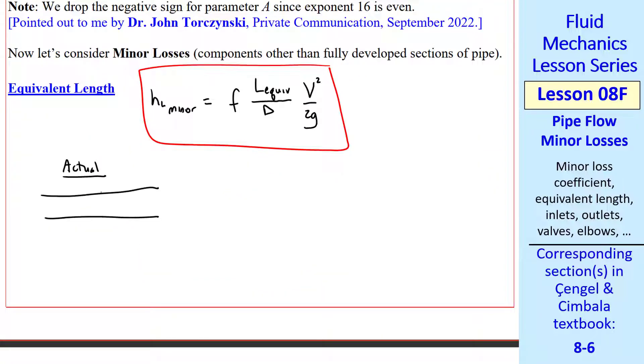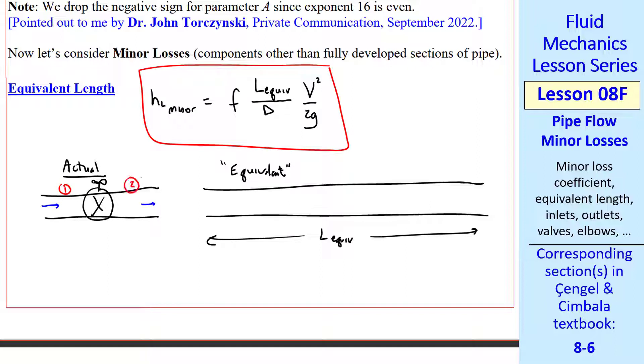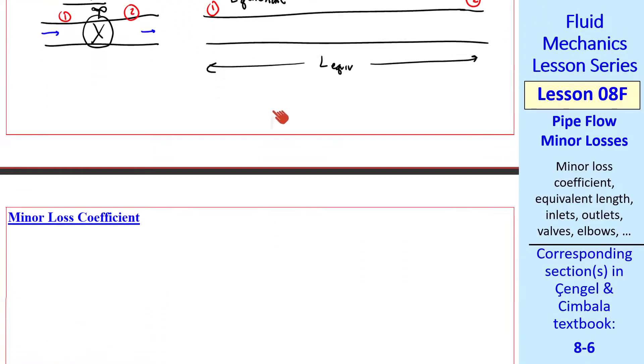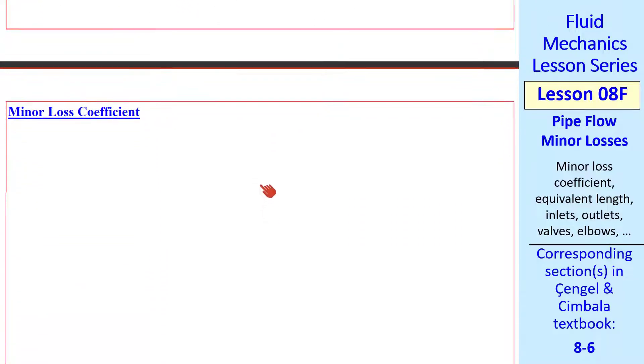Here's how it works. Suppose the actual pipe flow has a minor loss such as a valve. The equivalent case is a longer pipe, such that the loss across the valve is equivalent to the loss through this long pipe using this equation. We basically pretend that we have a longer pipe in place of the valve. In other words, the total head loss is the same in both of these cases. This is nice and simple, but it's not the most popular way to analyze minor losses.